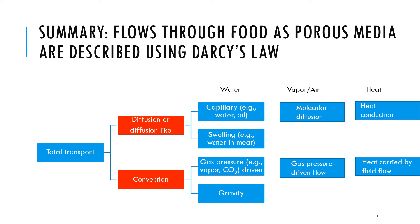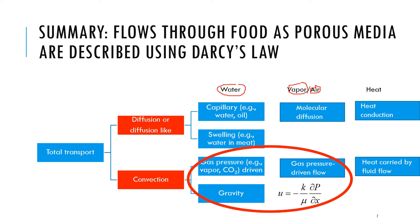To summarize, flow through food as a porous medium due to pressure as a driving force — whether it is water, vapour, or air — is given by Darcy's law. With Darcy's law, we can account for pressure-driven flow of water, pressure-driven flow of vapour or air, and any flow due to gravity. We now have a good grasp of the convection term for water and other gases.